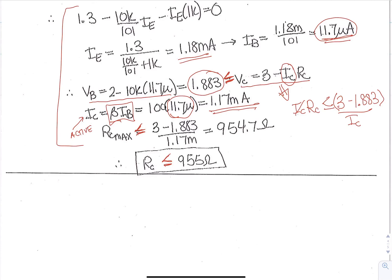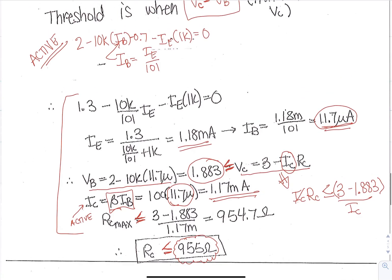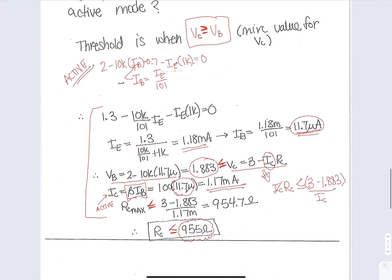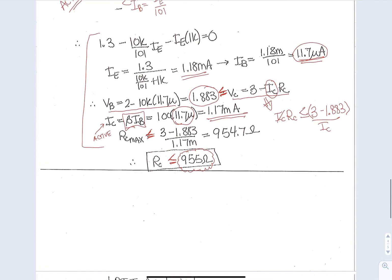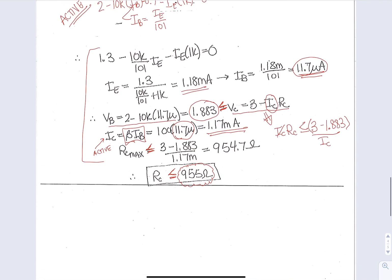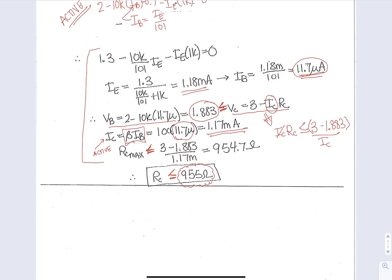And so I would want to pick a value, say half of this value, to make sure I'm well into the active region in order to ensure that this stays in the active mode. So that would be a good starting value as a designer to say, this is where I'm going to start. And from there, I would go to the simulation software and simulate it to verify that it will still meet all the conditions. All right, this concludes an analysis for a circuit in the saturation mode.